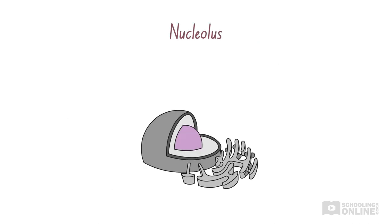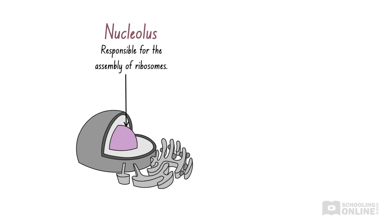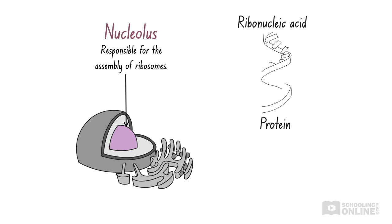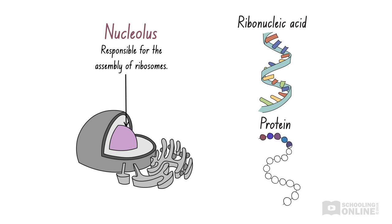The third and largest component in the nucleus is the nucleolus, which is responsible for the assembly of ribosomes. Ribosomes are organelles involved in protein synthesis, which we'll discuss in our second video on plant cells. The nucleolus is comprised of ribonucleic acid and proteins. Ribonucleic acid is made of a long chain of small molecules known as nucleotide bases. Proteins are long, structured chains of amino acids.